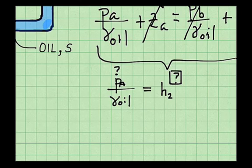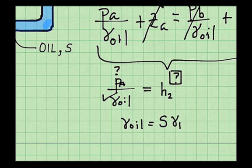So H2 is my goal, the pressure at A is unknown, and gamma oil is known because I can write that gamma oil equals the specific gravity of the oil times gamma water.